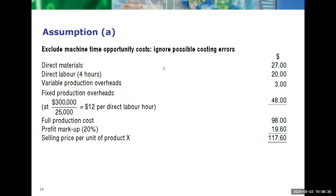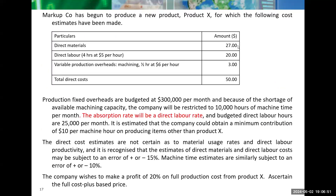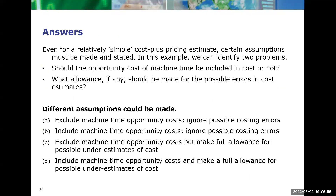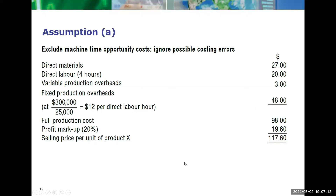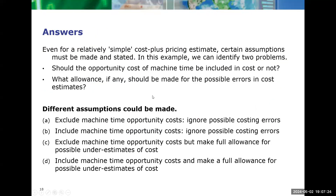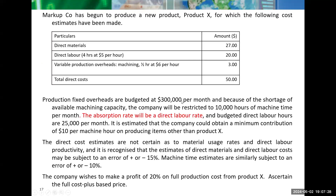Let us look at each of these one by one. In option one, we are excluding the opportunity cost for the machine time and simultaneously ignoring the possible costing errors. In this case, we basically list all the direct costs as given in the question: material $27, labor $20, variable overheads $3 — so total direct cost $50. Now before the markup for profit, we also have the fixed production overheads. We are told that fixed overheads are $300,000 per month and the absorption rate will be the direct labor rate.